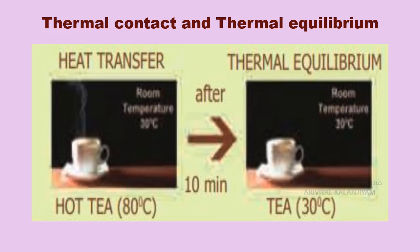For example, if a pot of milk from the refrigerator is set on the kitchen table, the two objects are in thermal contact. After a certain period, their temperatures are the same and they are said to be in thermal equilibrium.